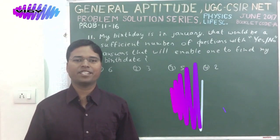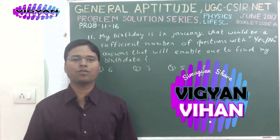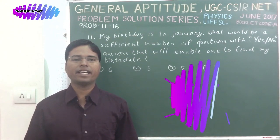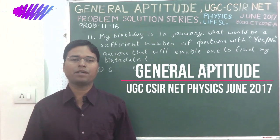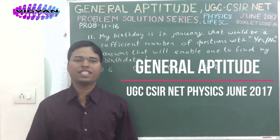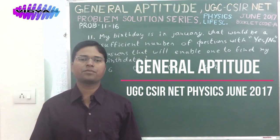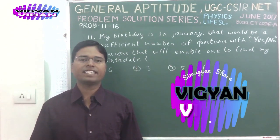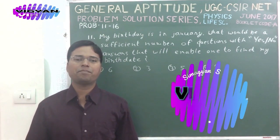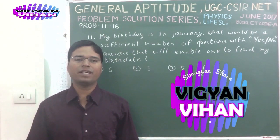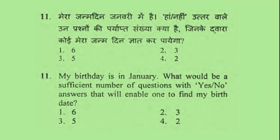Good morning friends, I welcome you all at your favorite YouTube channel Vikyan Nihana. This is our problem solution series for general aptitude part A of UGC CSIR NET. In this episode, we will solve problems number 11 to 15 of physical sciences paper June 2017. Attempting general aptitude problems will give candidates an advantage to score better and high rank. Keep practicing — I wish you all the best, let's start the solution.